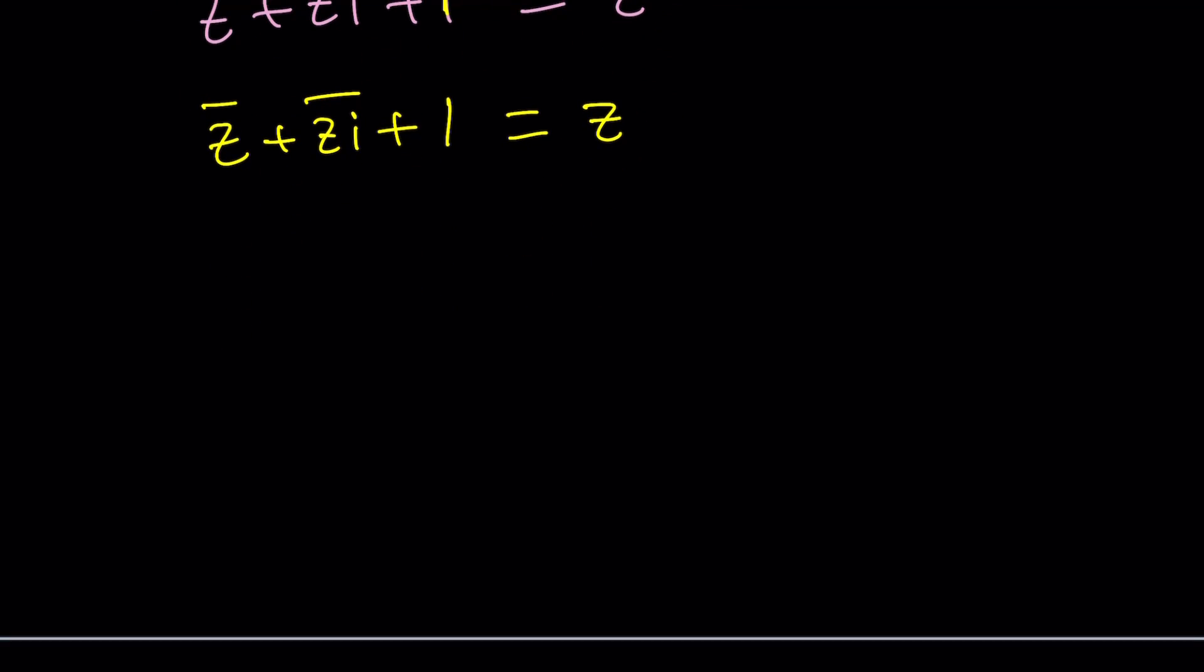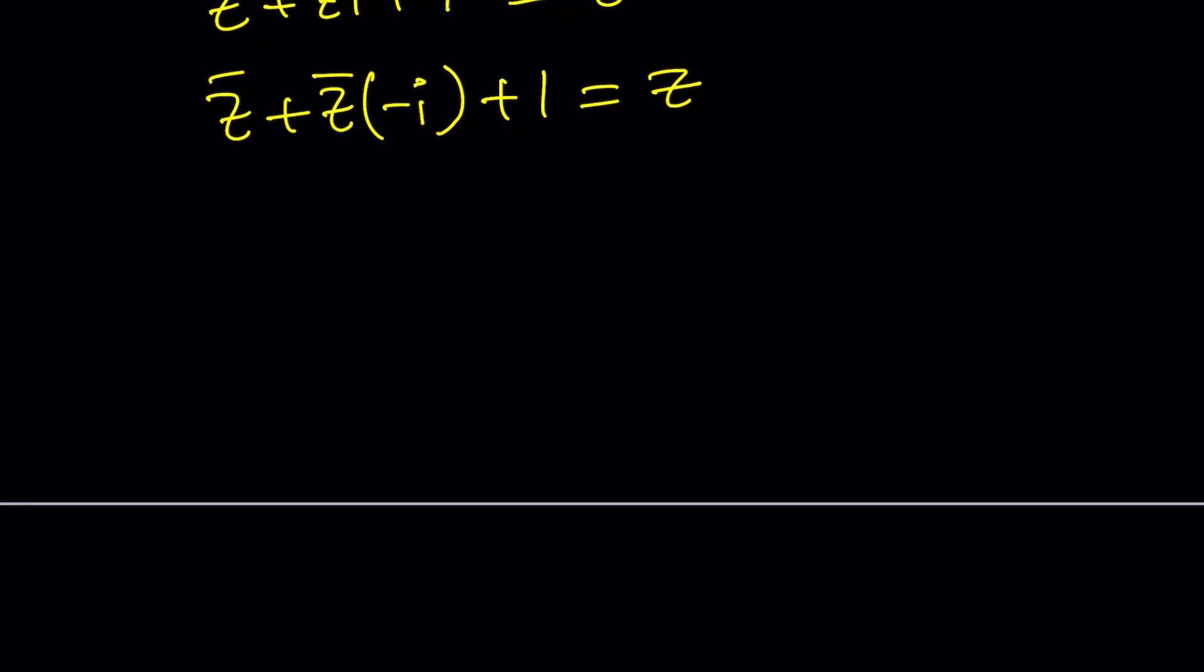Great. Let's go ahead and simplify this further. We're going to use the product rule. This is z bar. I bar is just negative i because it doesn't have a real part, right? So it's just going to change the sign for the imaginary part, which is just imaginary, plus one, and that's equal to z because we just changed it. Great. Let's go ahead and simplify this a little bit more. Z bar minus z bar i plus one equals z. And finally, I can factor out z bar and write it as one minus i plus one equals z.